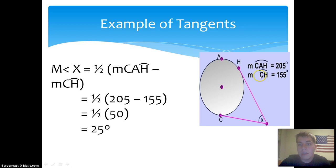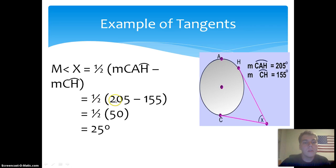The theorem states that the measure of angle X equals one half the quantity arc CAH minus arc CH. Substituting in the known values, the measure of angle X equals one half times 205 minus 155. That gives 50, and one half times 50 equals 25. Therefore, the measure of angle X is 25 degrees.